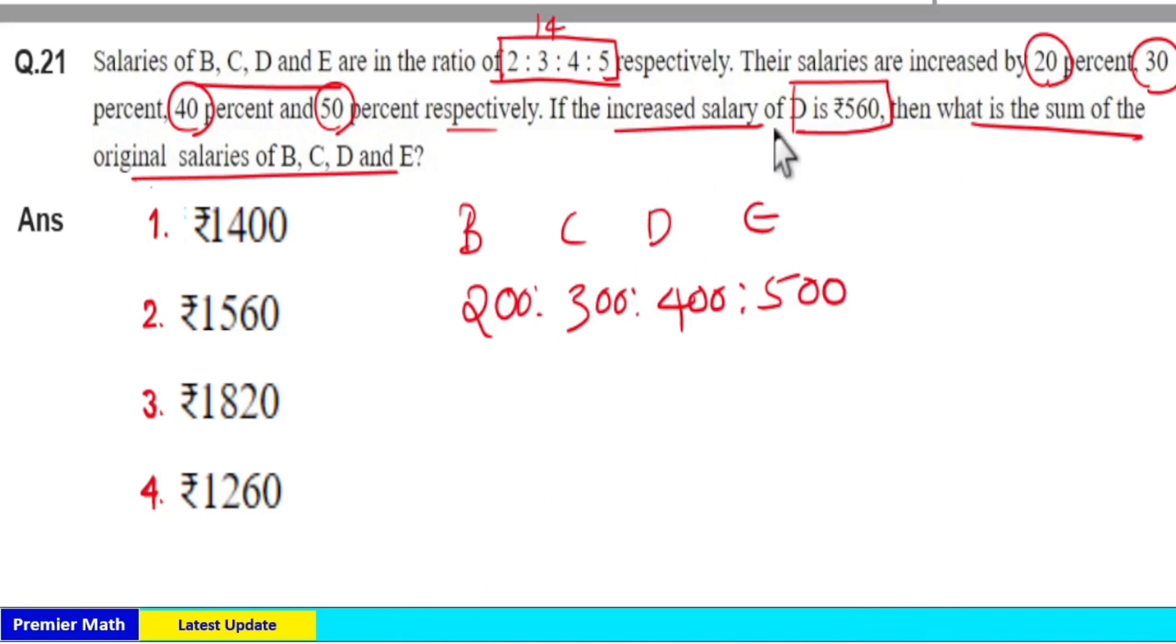Now their salaries increased by 20, 30, 40 and 50% respectively. The increased salary of D is Rs.560. Increased salary is equal to Rs.560.